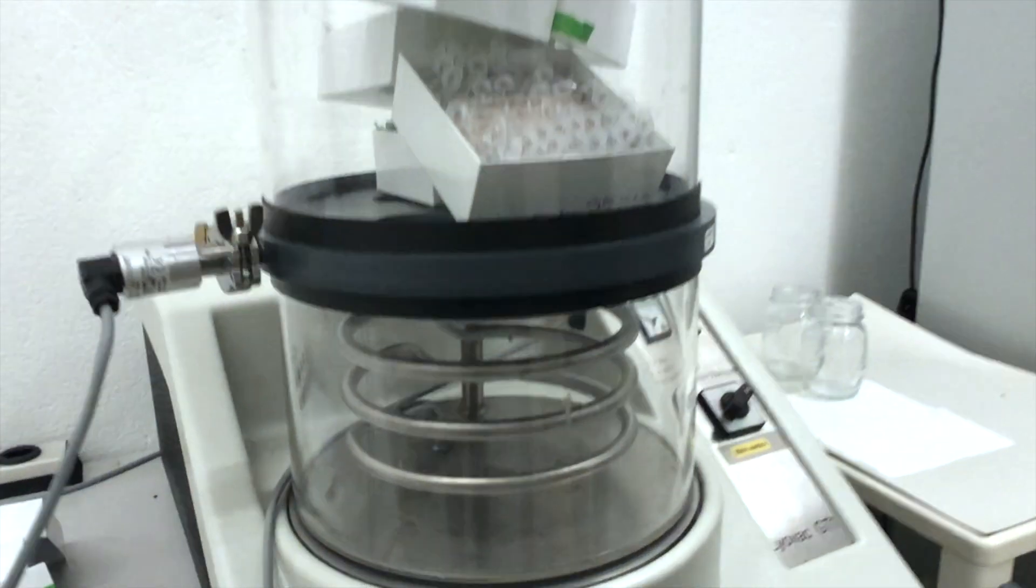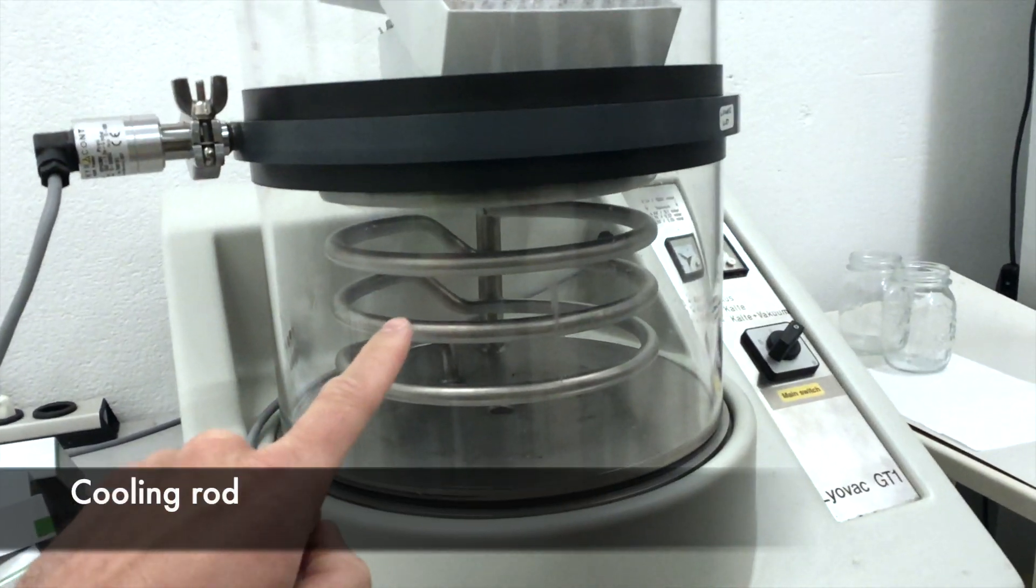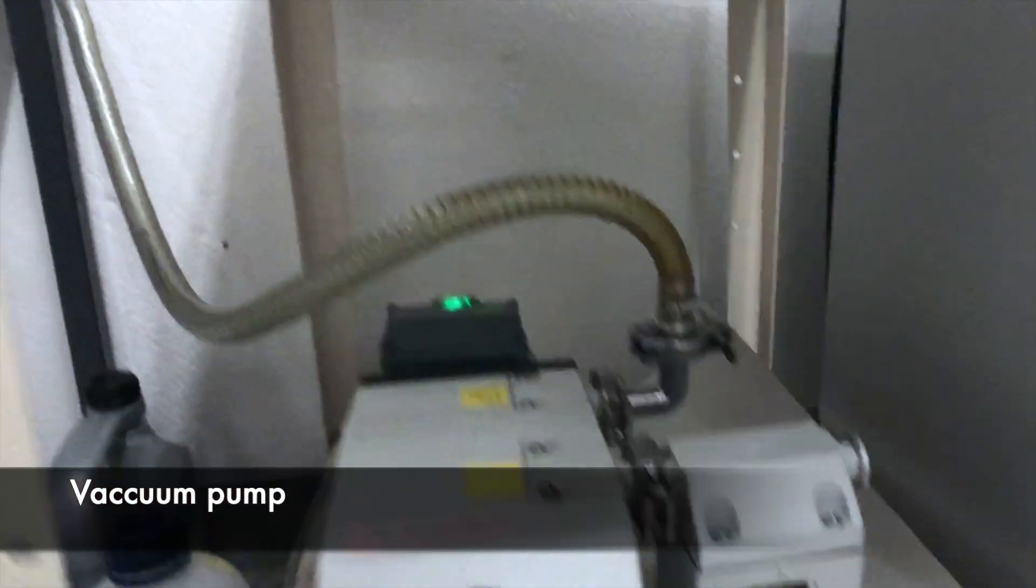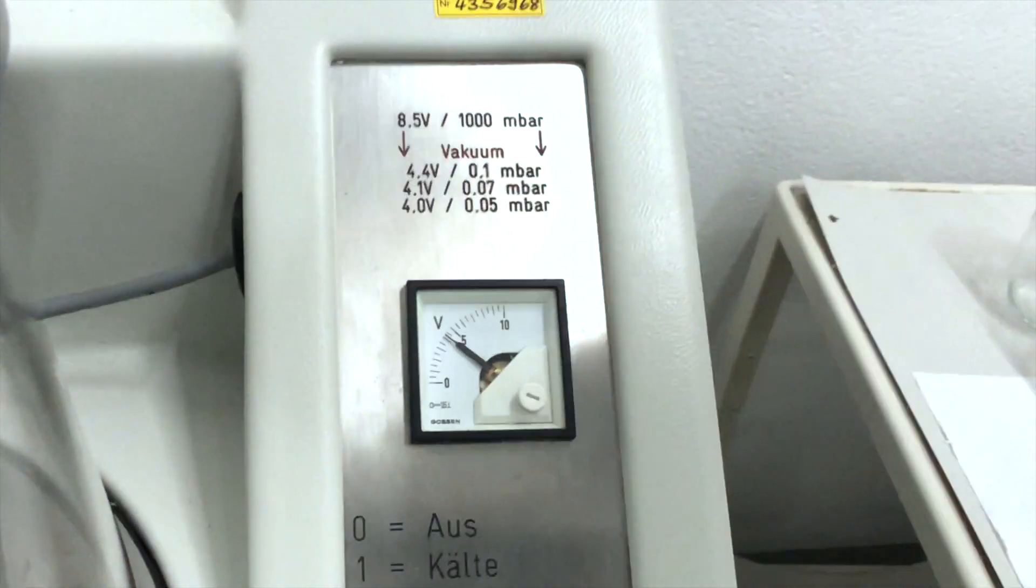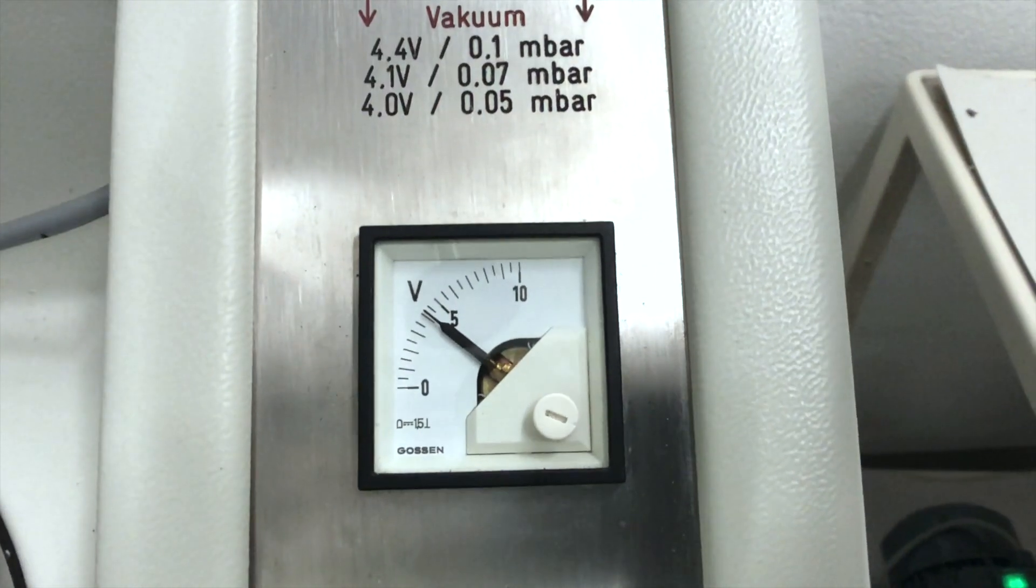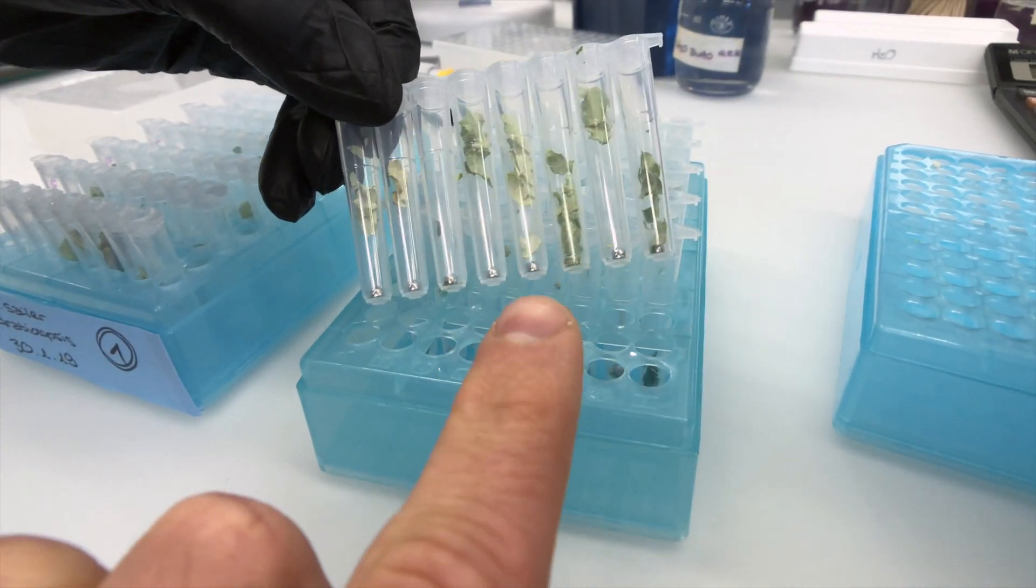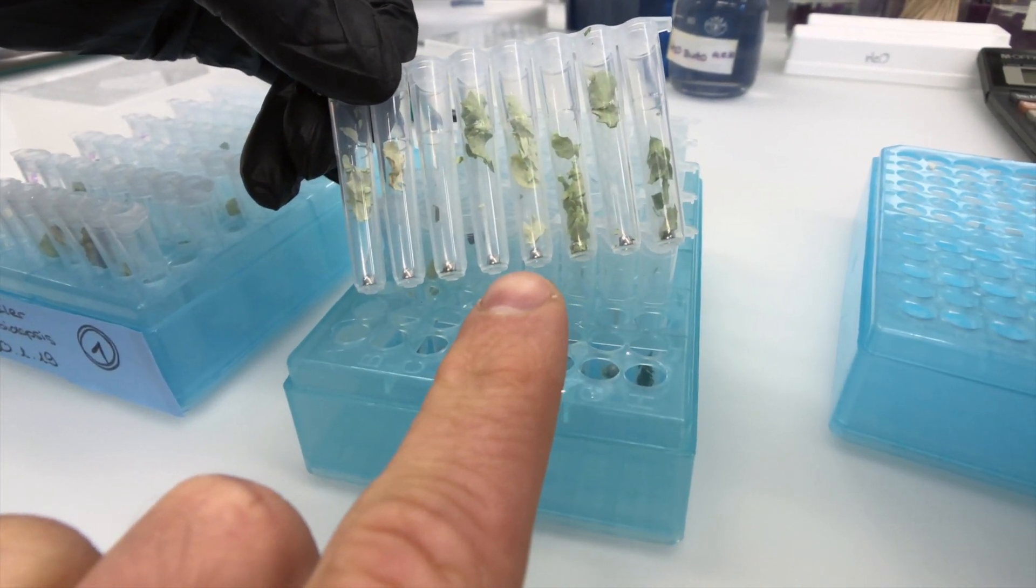Before we extract the DNA from leaves we freeze-dry them for easier handling. Freeze-drying is a very gentle method of drying materials. These beads are going to crush the leaves.